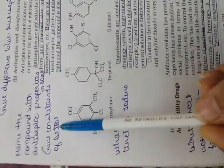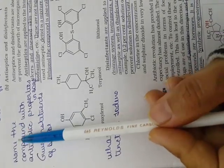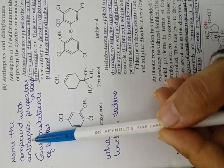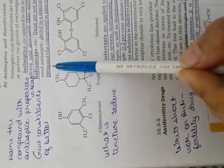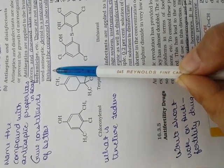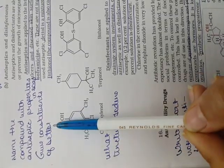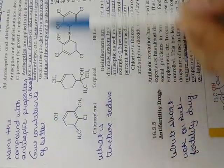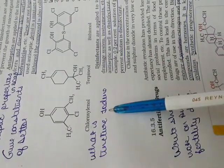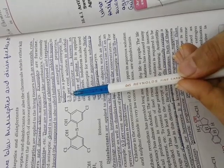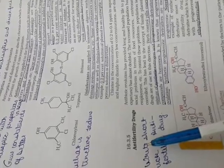You may also get one markers from these. The first important question: name the compound with antiseptic properties in soap. The answer is Bithionol. Another question: give constituents of Dettol. You have to memorize the constituent of Dettol. Next, what is tincture iodine? You have to memorize the percentage of alcohol in this, as well as the percentage of iodine.